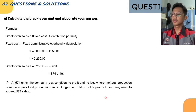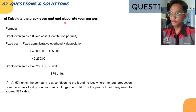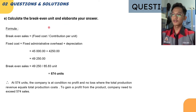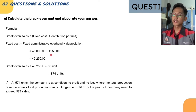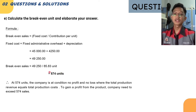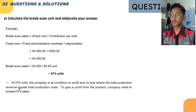The last sub-question asks us to calculate the break-even unit. The formula is fixed cost divided by the contribution margin. Fixed cost equals fixed administrative overhead plus depreciation: 45,000 plus 4,250 equals 49,250 ringgit. The break-even unit is 574 units — this is the condition where the company has no profit and no loss, meaning total production revenue equals total production cost. To make a profit, the company needs to exceed 574 sales.